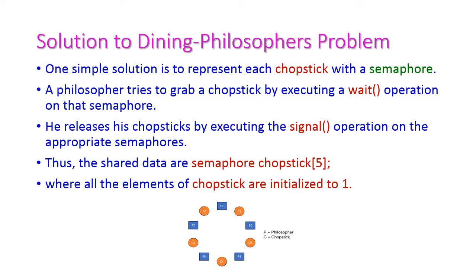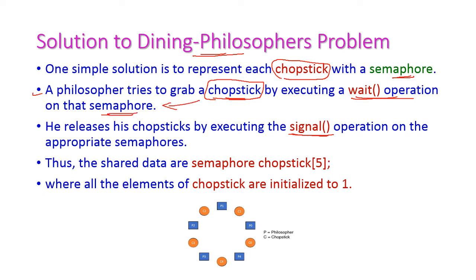By using a semaphore, we can give a solution to the dining philosopher problem. Consider each chopstick as a semaphore — an individual semaphore. The philosopher tries to grab a chopstick by executing a wait operation. In the semaphore, there are 2 operations: the first one is wait operation and the second one is signal operation. The philosopher tries to take one chopstick, then he will immediately execute the wait operation for that semaphore — for that particular chopstick. If he releases the chopstick after eating, then he will execute the signal operation for that particular semaphore, that is for that chopstick. For every chopstick, a philosopher has to execute wait and signal operations.